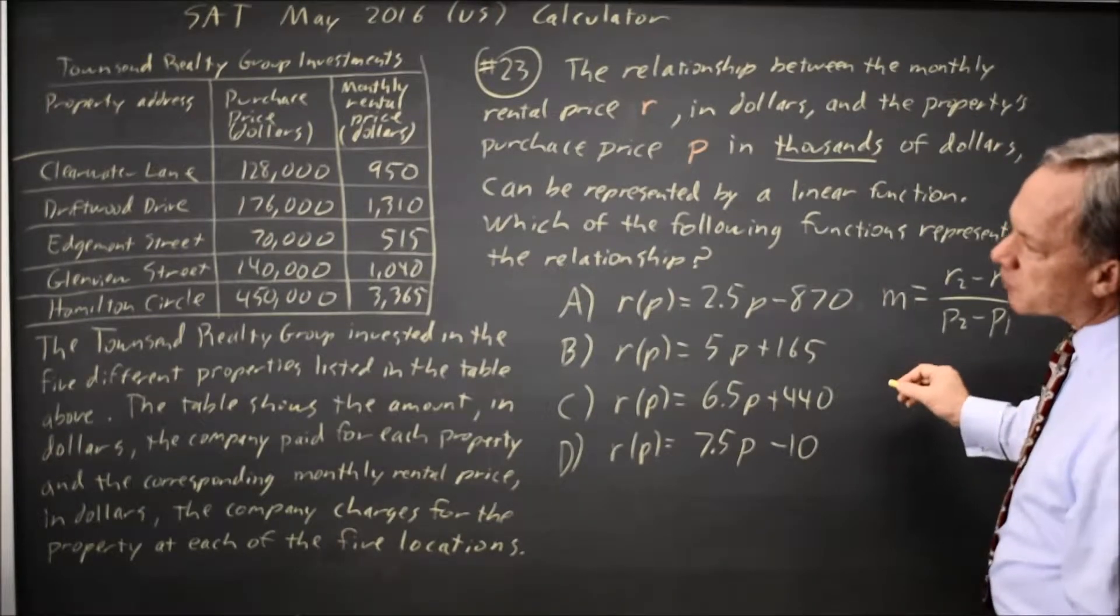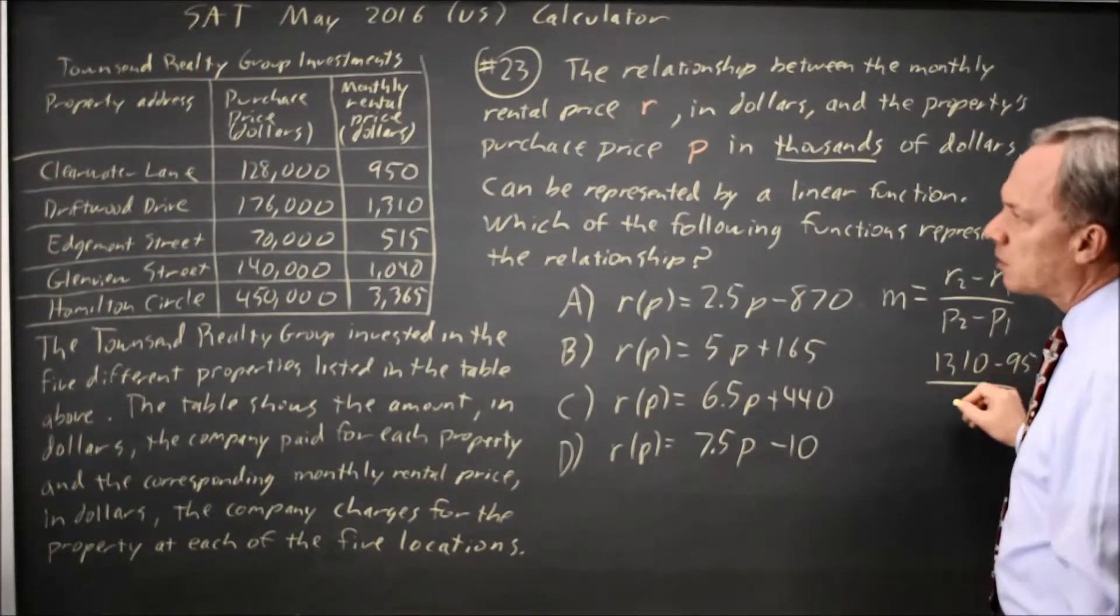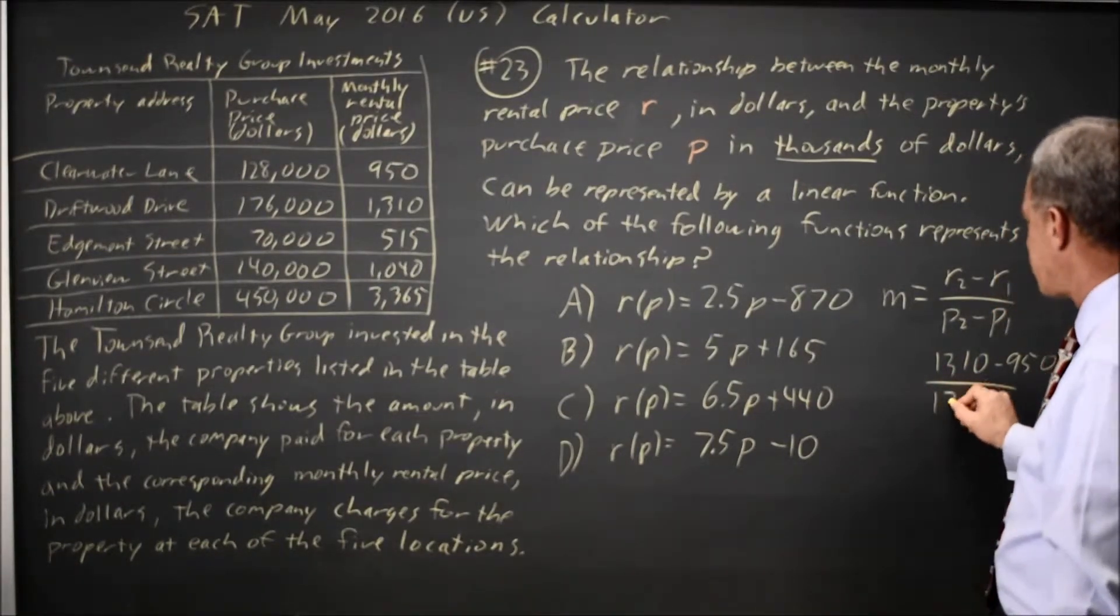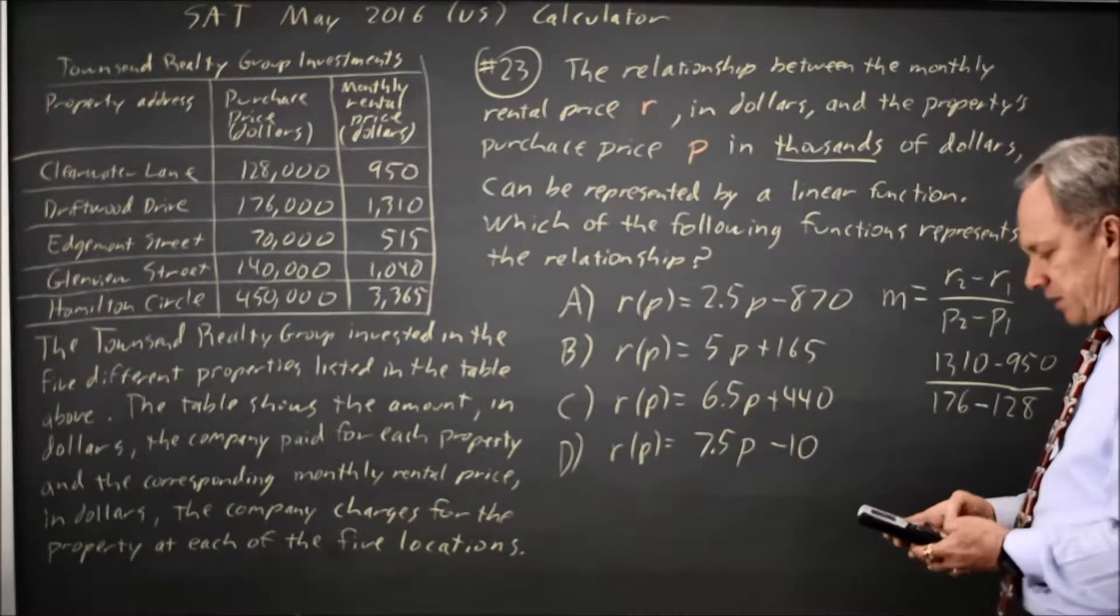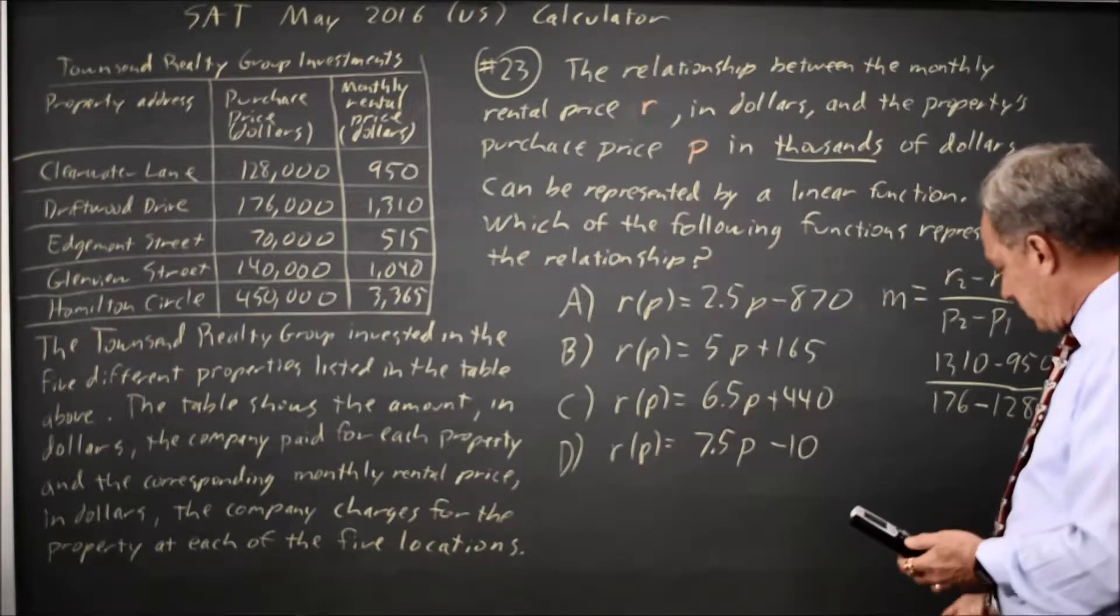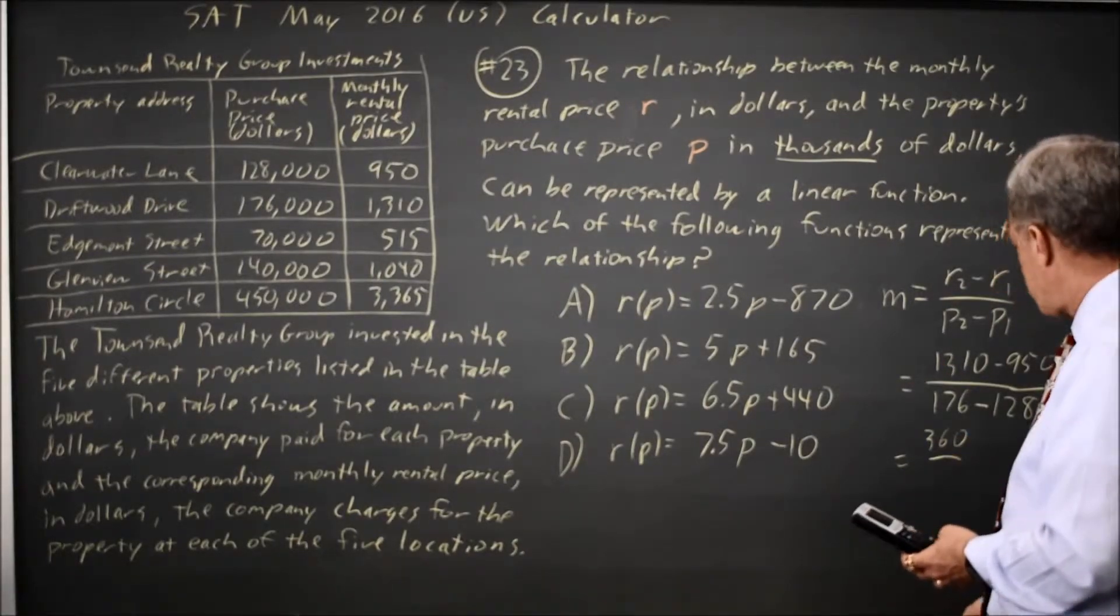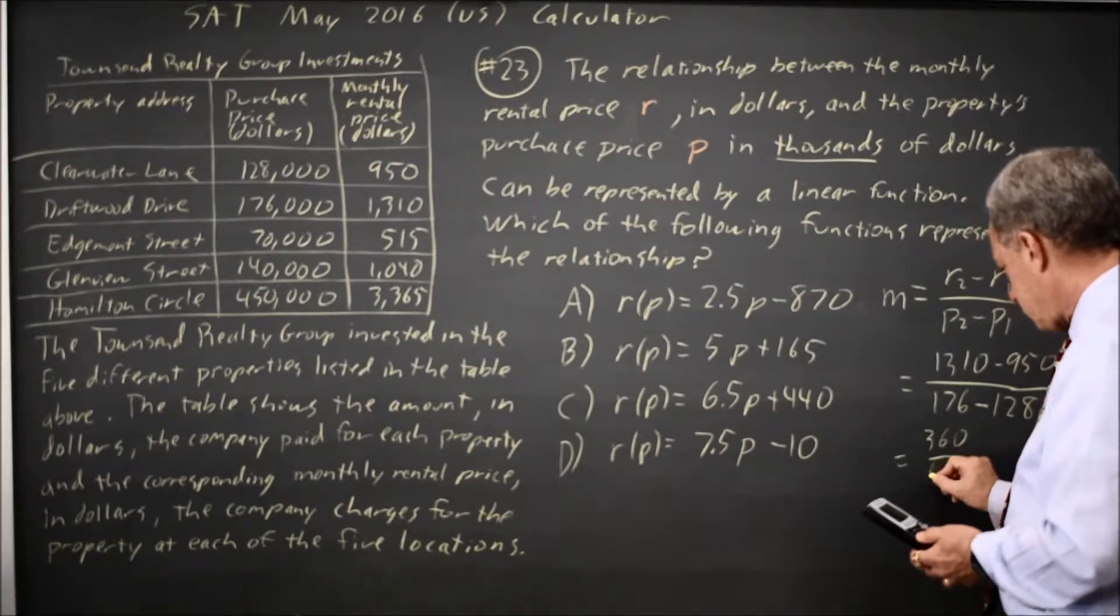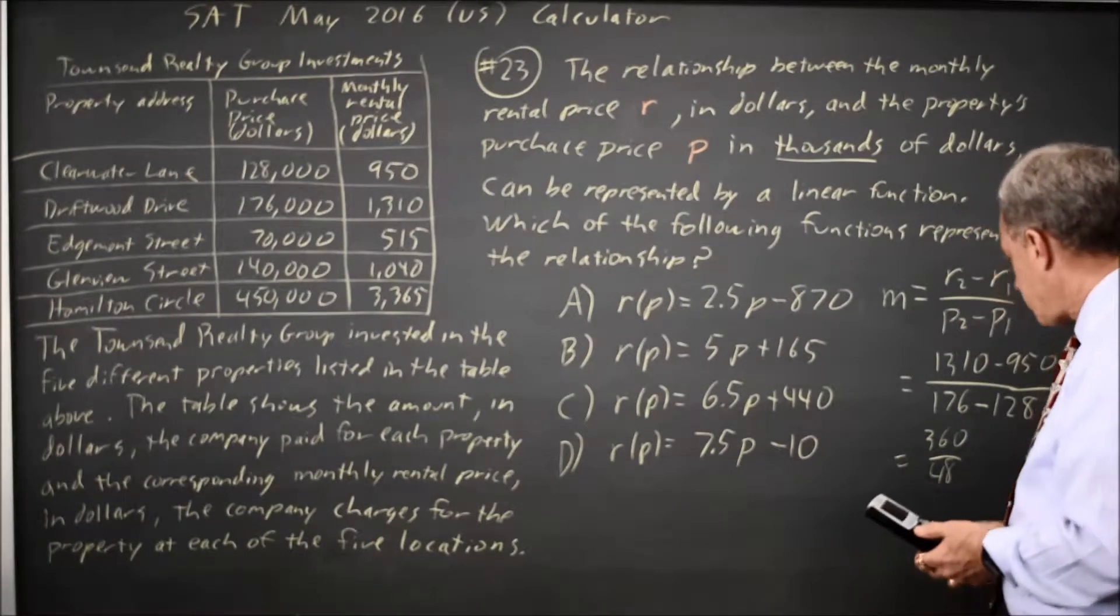So looking at the first two rental prices, that would be 1310 minus 950 over price in thousands of dollars 176 minus 128. And on my calculator that is 1310 minus 950 is 360 over 176 minus 128 is 48. And that would be 7.5.